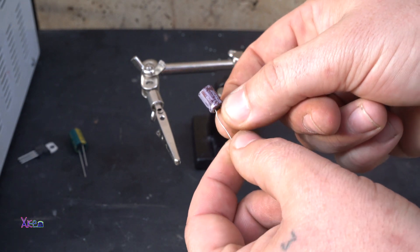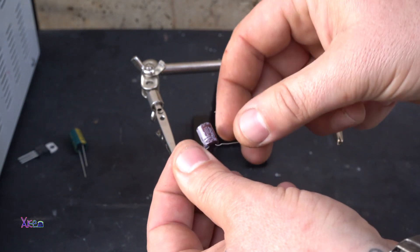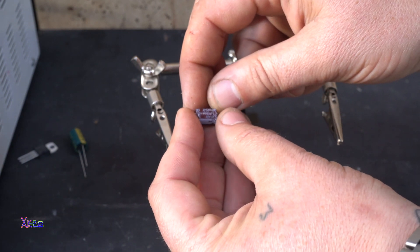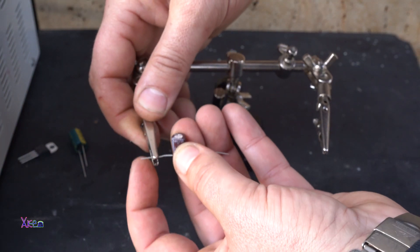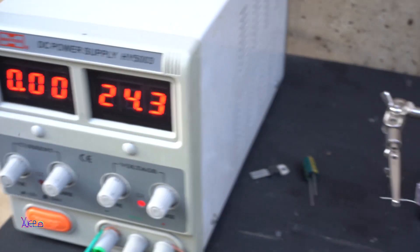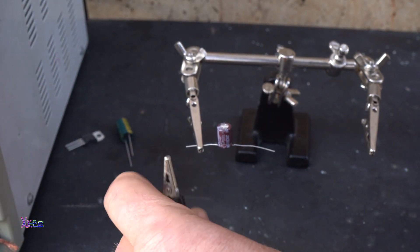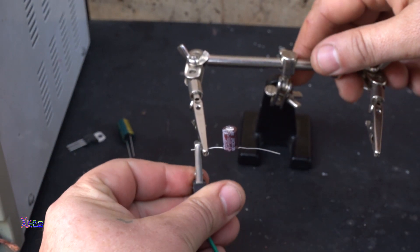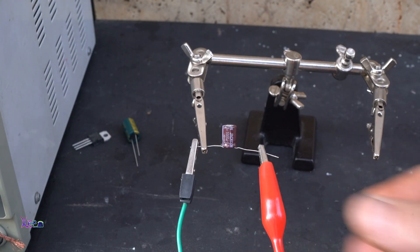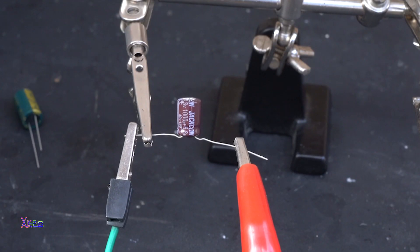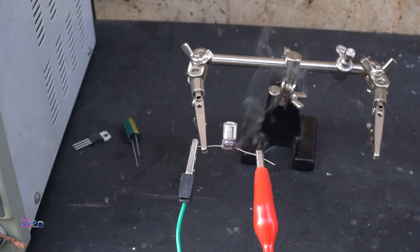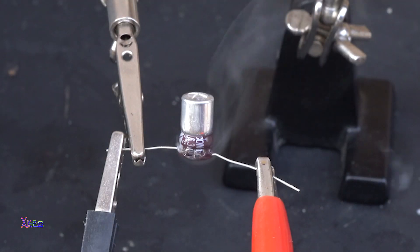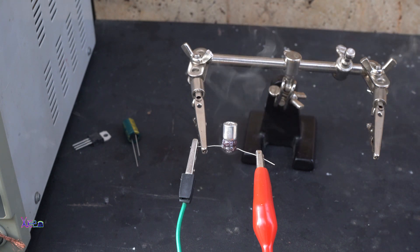Next electronic component to be burned out is this capacitor that is 1000 microfarads but at maximum 6.3 volts. I am going to hook it up to 24 volts. So you need to do this if you are doing it outside.